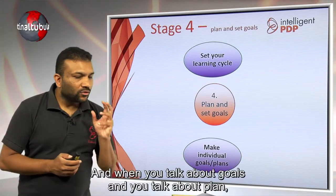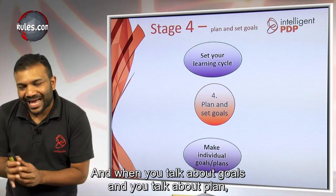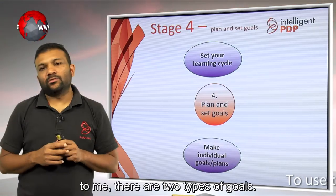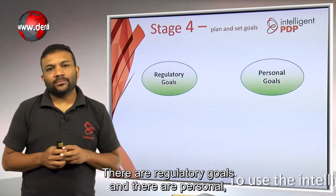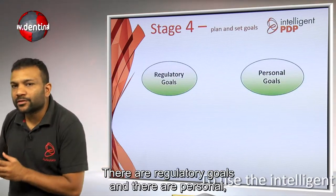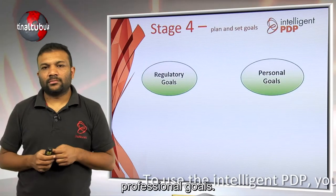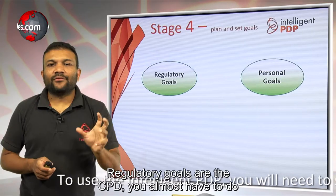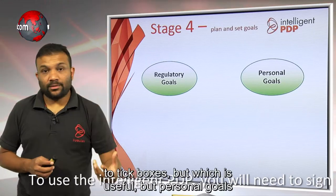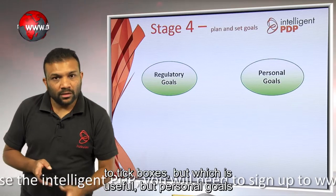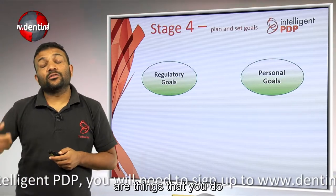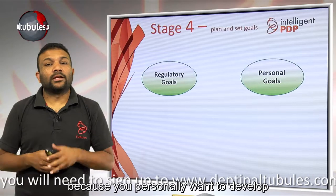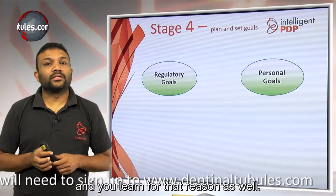When you talk about goals and plans, there are two types of goals: regulatory goals and personal, professional goals. Regulatory goals are the CPD you almost have to do to tick boxes, but which is useful. Personal goals are things that you do because you personally want to develop and you learn for that reason as well.